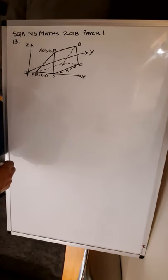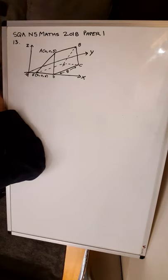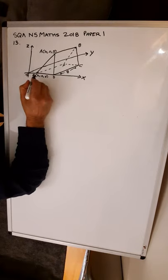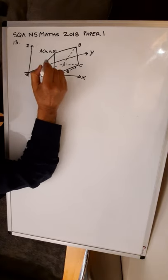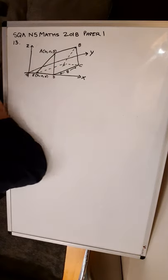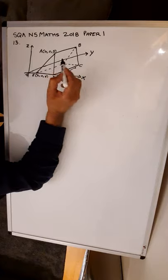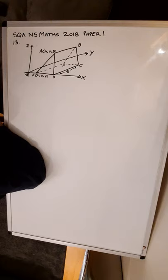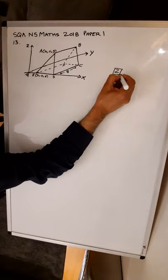SQA National 5 Maths 2018 paper 1, question number 13. The diagram shows a triangular prism ABCDEF relative to the coordinate axes XYZ. AD is equal to AE. DC is 8 units. EF, DC, and AB are parallel to the y-axis. Write down the coordinates of B and C — this is for two marks.